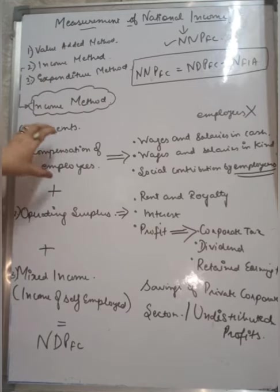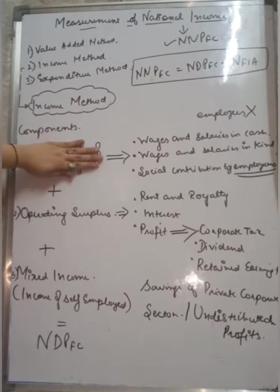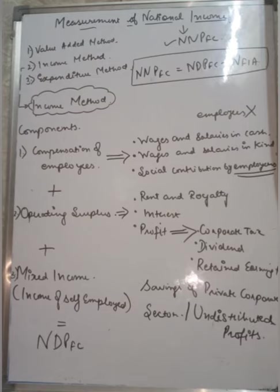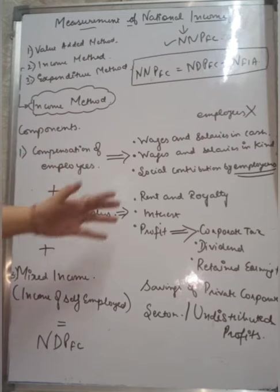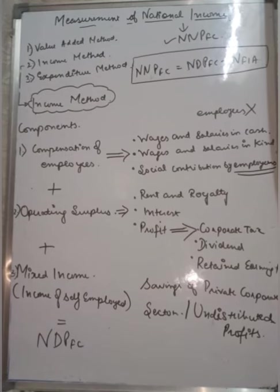If compensation of employees is given numerically, we will take that figure directly. The remaining three components are rent, interest, and profit, and together these form the operating surplus. Talking about rent — rent and royalty are used together as a term. Rent is basically for tangible assets such as buildings, which we can see and touch.